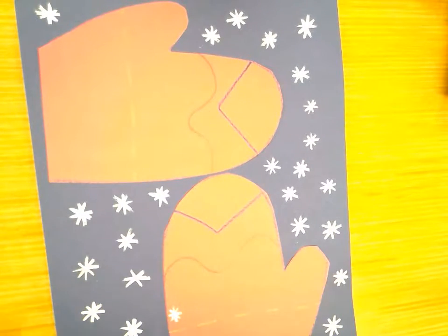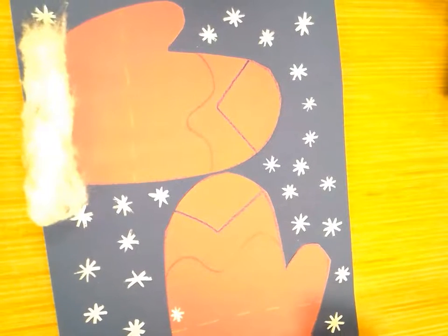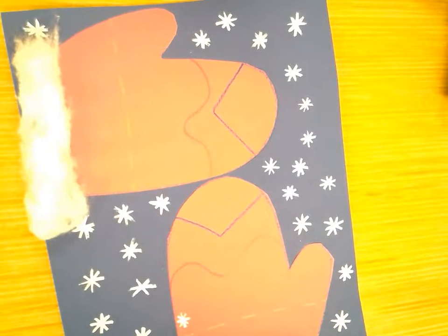So I'm going to add some cotton ball strips to make them nice and fluffy around the wrists where you put them on your hands.